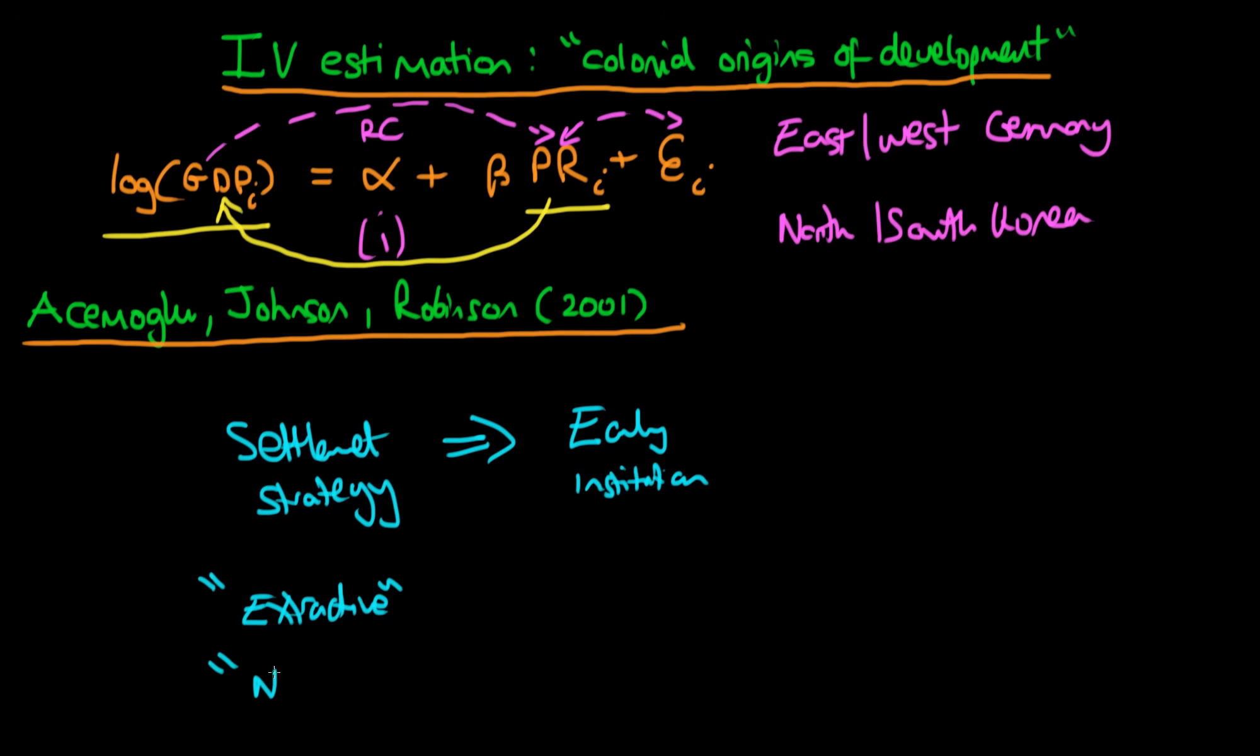However, if you contrast this with the neo-colonialist strategies installed in places like the US or New Zealand or perhaps even Australia, the idea is that in these neo-colonialist countries the settlers took up the opportunity to build their own versions of the institutions they have back home. The early institutions built there were very good, and these early institutions fed through to current institutions.